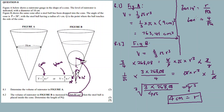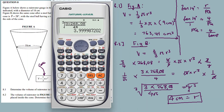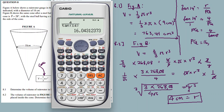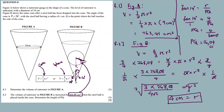Now solving for PQ: tan 14 degrees equals 4 over PQ. Cross-multiplying: PQ equals 4 divided by tan 14 degrees. Using the calculator: 4 divided by tan 14 degrees gives PQ equals 16.04 centimeters.